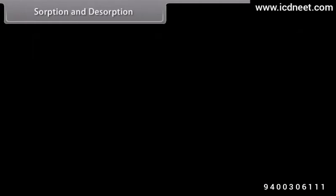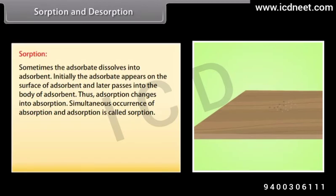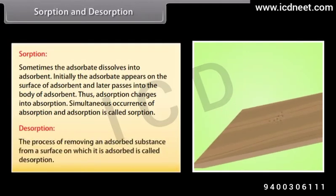Sometimes the adsorbate dissolves into the adsorbent. Initially the adsorbate appears on the surface of adsorbent and later passes into the body of adsorbent, thus adsorption changes into absorption. The simultaneous occurrence of absorption and adsorption is called sorption. Desorption is the process of removing an adsorbed substance from a surface on which it is adsorbed.